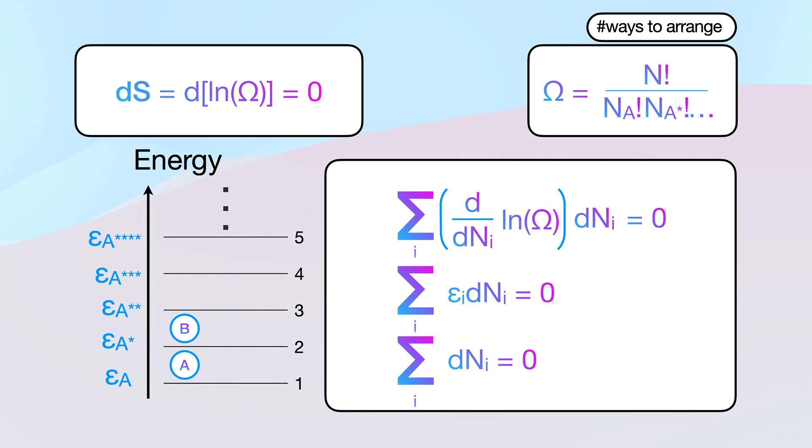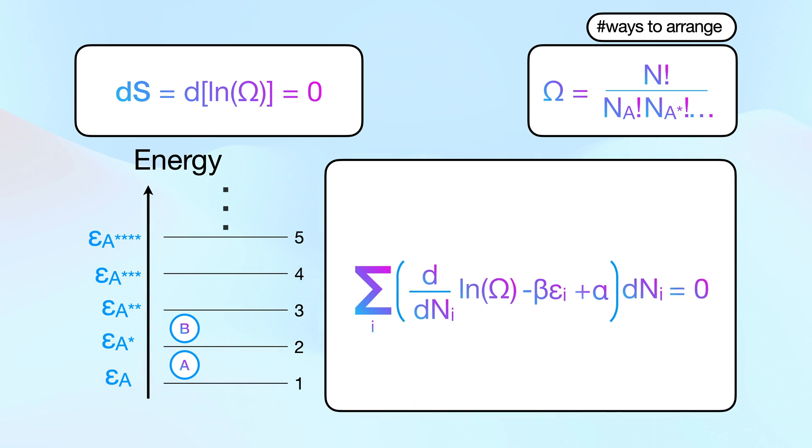Two, we're assuming the total number of particles don't change, and likewise, summing up all the changes in occupancy should all cancel out to zero. We can include these constraints by saying that they contribute to some amount alpha and negative beta in our sum.